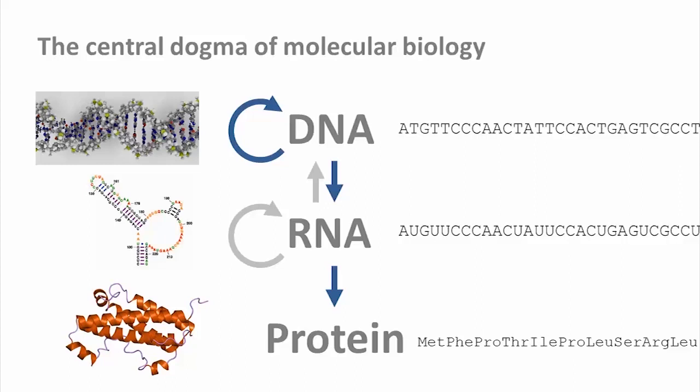DNA just needs to store information. But proteins are the workhorses of the cell and do hundreds of different things for which a great variety of chemistry is necessary. Proteins are therefore composed not of four, but 20 different building blocks. Understanding these building blocks, the amino acids, is the main topic of this lecture. But let's first look at the different roles that proteins have in a cell.